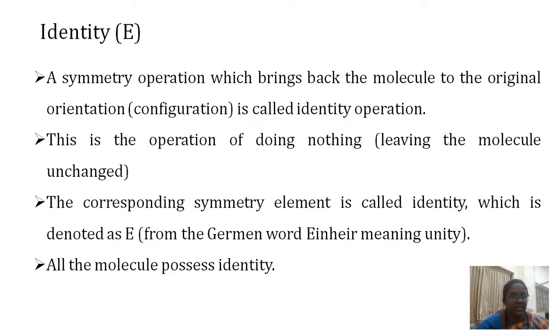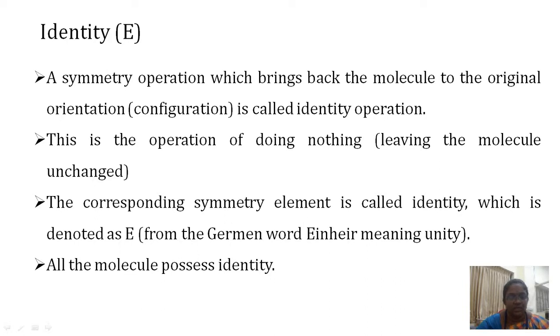The identity element E is a symmetry operation that brings back the molecule to its original orientation — it is the operation of doing nothing, leaving the molecule unchanged. The symbol E comes from the German word 'Einheit' meaning unity. All molecules possess the identity element. In this lecture we have studied symmetry elements and symmetry operations in detail. Thank you.